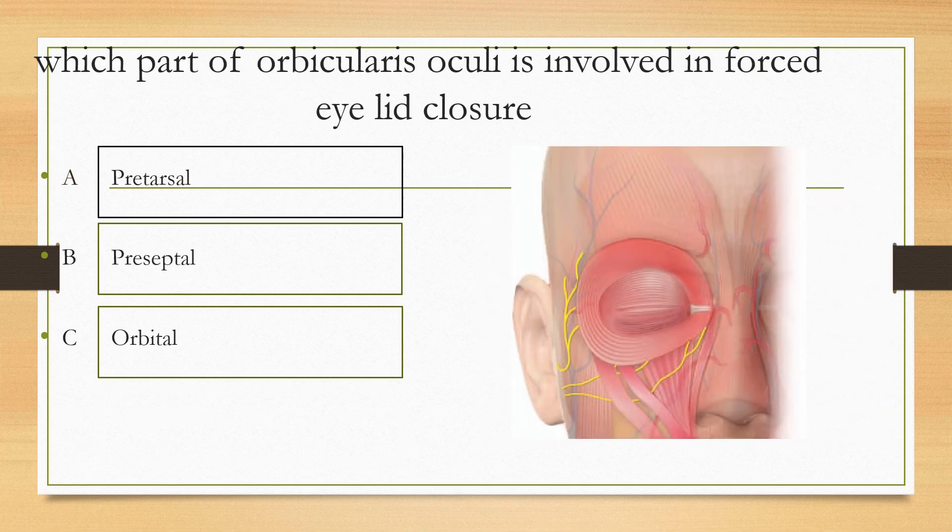Fourth question. Which part of the orbicularis muscle is involved in forced eyelid closure? Option A pretarsal, option B preseptal, option C orbital muscle. The answer is the orbital part of the orbicularis oculi is involved in forced eyelid closure.